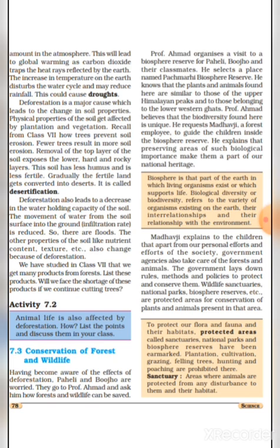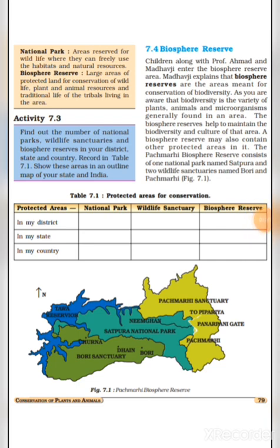Sanctuary — Areas where animals are protected from any disturbance to them and their habitat. Banyajeev abhyaranya mein jantu evam unke aawas kisi bhi prakar ke viksheob se surakshit rehte hain, jahaan unhein aur unke aawas ko kisi prakar bhi nuksan nahi hota. National Park — Areas reserved for wildlife where they can freely use the habitats and natural resources. Rastriya udyan banyajantuon ke liye arakshit chetra hota hai, jahan ye banyajantu swatantra rup se reh sakti hain evam prakrtik sansadhon ka upyog kar sakti hain.